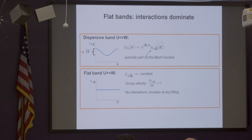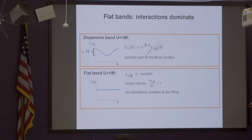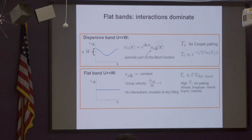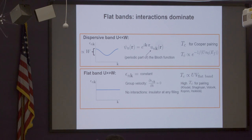Here are very simple things: a usual dispersive band with some bandwidth, and this object — the Bloch function, the periodic part especially — is what gives you the quantum metric and so on. Then you could have a flat band; it doesn't need to be exactly flat, it could be just that the interaction scale is bigger than the bandwidth — then you're allowed to call it a flat band. In this context, BCS theory gives T_c proportional to the interaction energy times the volume of the flat band, a bit like the strong coupling regime, and this can give much higher T_c for small interactions.